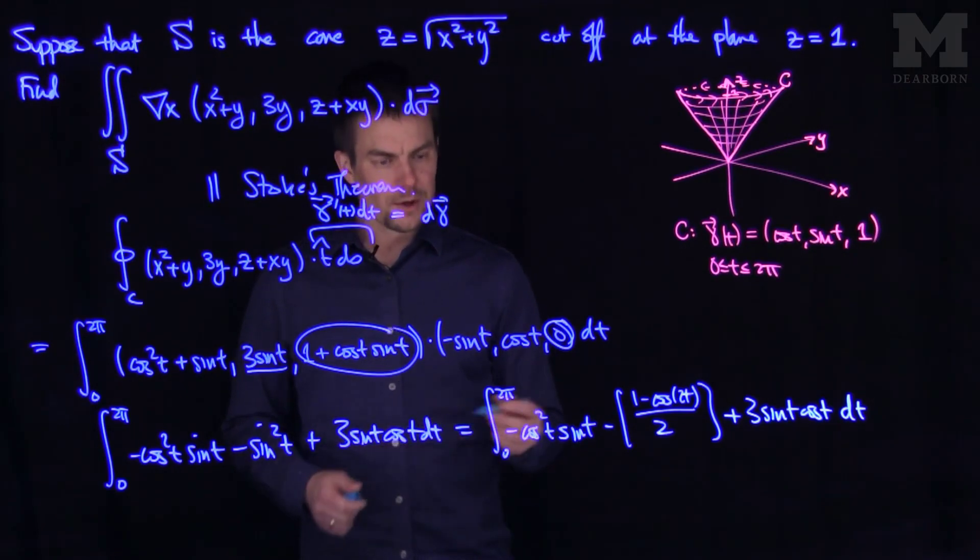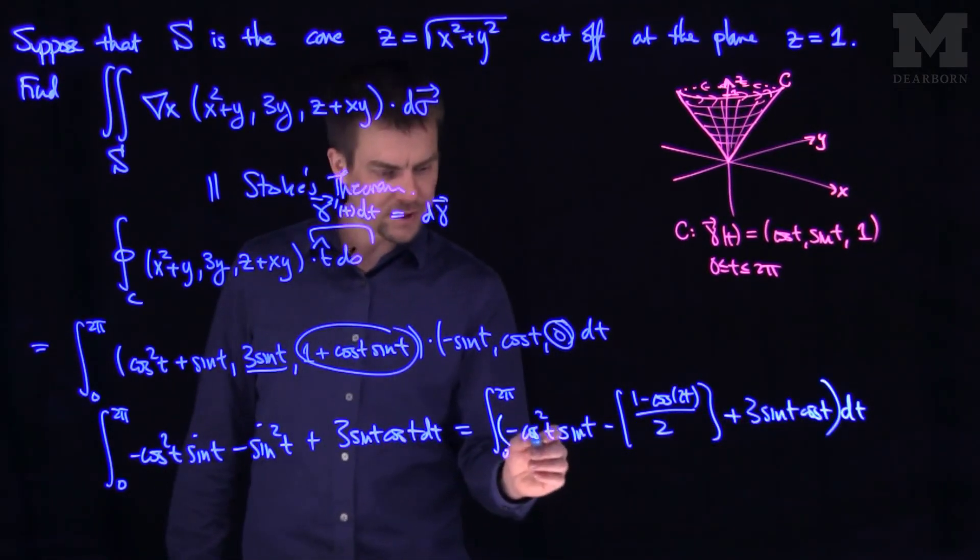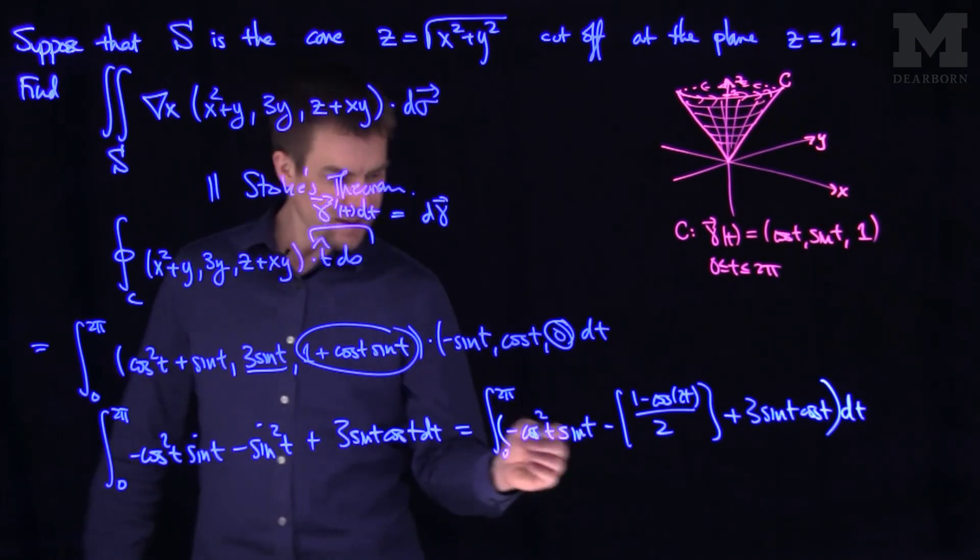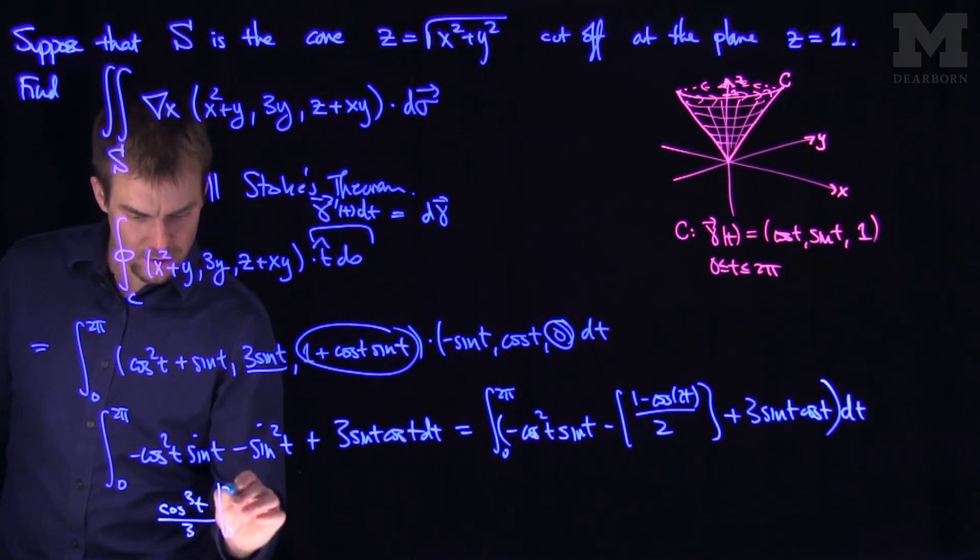Now let's do each of these integrals. So if I integrate this thing over here, what will happen? If I integrate cosine squared of T times sine of T with a negative sign, that's cosine cubed of T, cosine cubed of T over 3 from 0 to 2 pi.